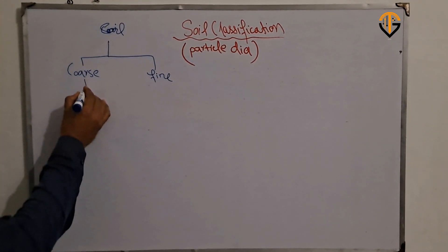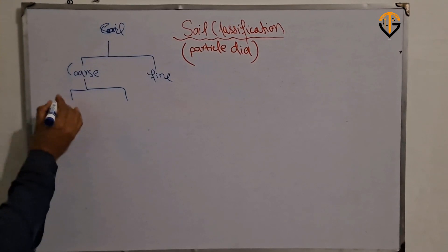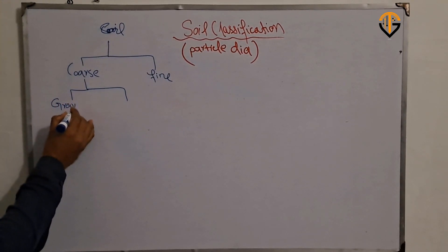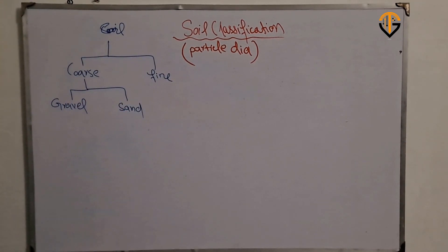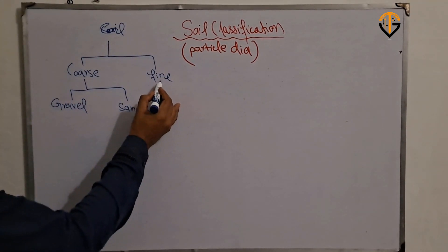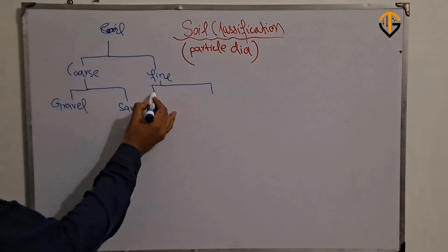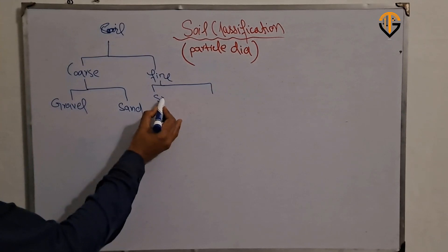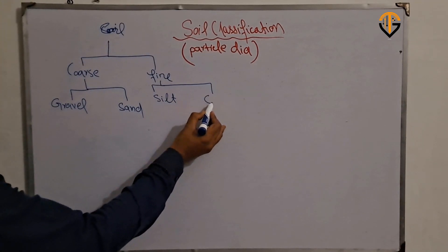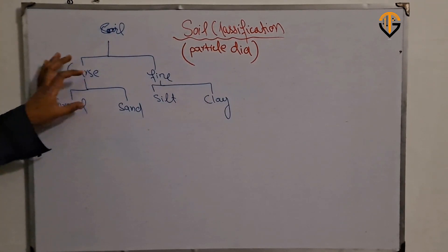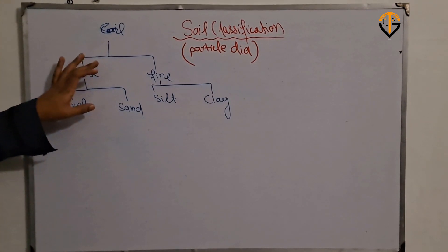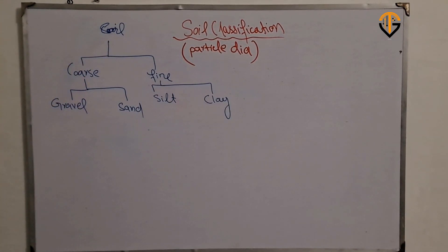Coarse type of soil is further divided into two types: the first one is gravel and the second one is sand. Similarly, fine type of soil is further divided into two major types: silt and clay. We need to know the diameter of particles used to classify each soil type.